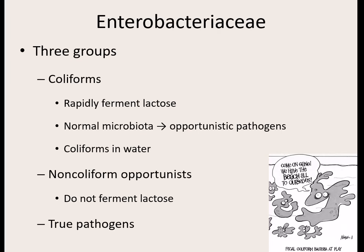Coliforms means they can ferment lactose. On a MacConkey plate, if bacteria in this group can ferment lactose, we would see pink colonies. MacConkey plates can help us narrow down if a bacteria is a coliform or not. There are still lots of bacteria in the coliform group, and most of them are normal microbiota — normal flora bacteria that can cause disease usually if they get somewhere else.